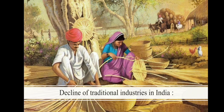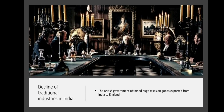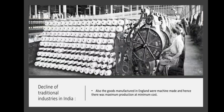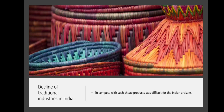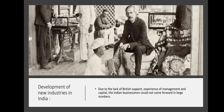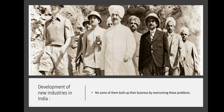Decline of Traditional Industries in India. The British government imposed huge taxes on goods exported from India to England, while very less tax was imposed on goods imported from England to India. Goods manufactured in England were machine-made, allowing maximum production at minimum cost. Competing with such cheap products was difficult for Indian artisans. Eventually, traditional industries closed down and many artisans became unemployed. Due to lack of British support, management experience, and capital, Indian businessmen could not come forward in large numbers, yet some overcame these problems to build their businesses.